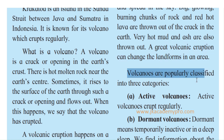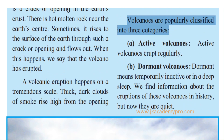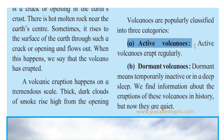Volcanoes are popularly classified in three categories. The first is the active volcano. Active volcanoes erupt regularly — this is what has happened with the Krakatoa volcano, so it is an active volcano. That means it erupts regularly; after some years it is dormant, then again it erupts. So it keeps on erupting and doesn't stop after one eruption.